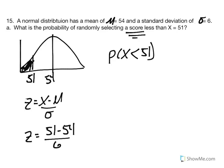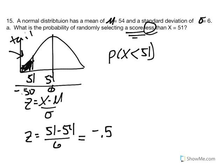We simply replace variables: z equals 51 minus 54 divided by 6, giving us negative 0.5. A score of 51 is half a standard deviation unit below the mean. Because it said less than, we focus on the tail in our unit normal table. This can be rewritten as the probability of a z-score less than negative 0.5, so we use the unit normal table entering with z of 0.5 and report the tail.